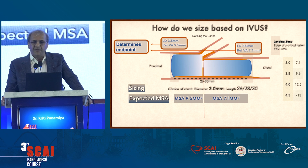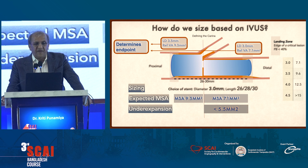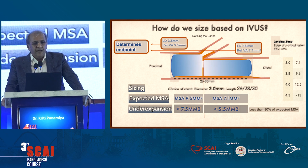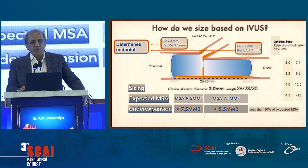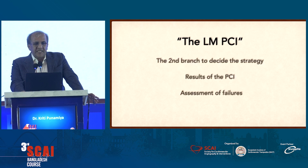In the distal part the MSA will be 7.1, and in the proximal it's going to be 9.5. Therefore, under-expansion is defined as anything less than 7.5 approximately proximally and less than 5.5 distally. Having set these rules, we can now apply them in the context of anything, so let's apply it in the left-main PCI.